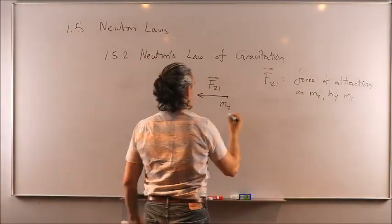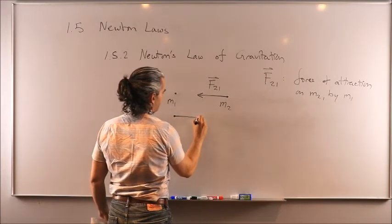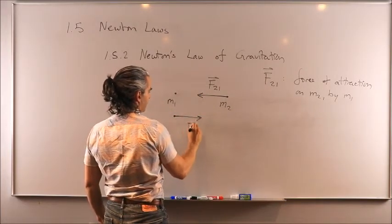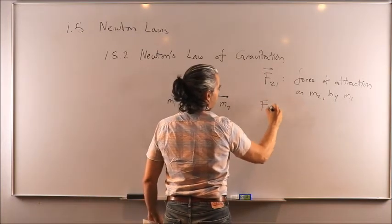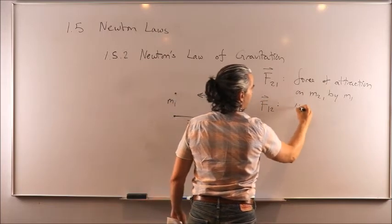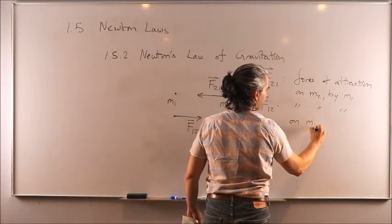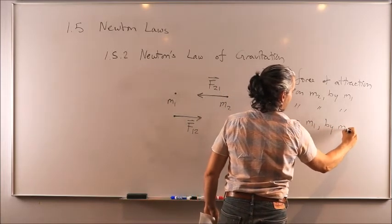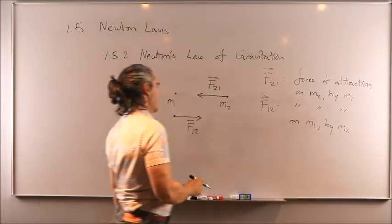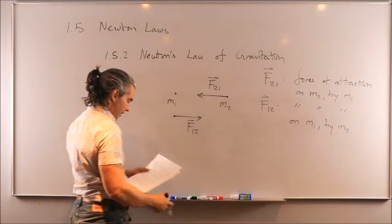And then you have the opposite direction, F_12, or F_12 is the force of attraction applied on m1 exerted by m2. And again, by virtue of Newton's third law, they are equal magnitude yet in opposite direction.